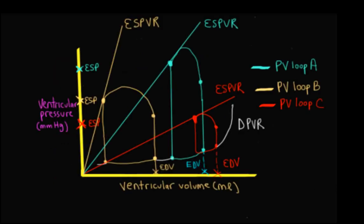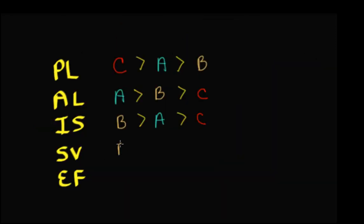Now let's look at stroke volume — the difference between the end diastolic volume and the end systolic volume. The width of the PV loop is greatest for PV loop B, followed by A, followed by C. So the stroke volume ranking: B is greater than A is greater than C.